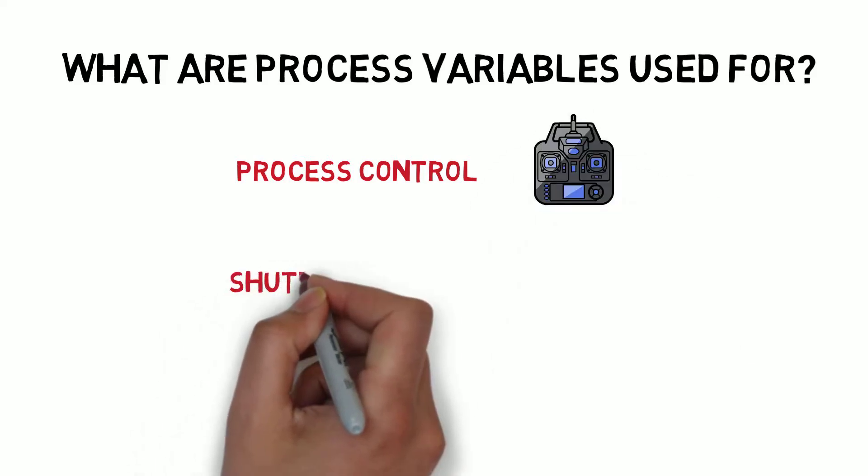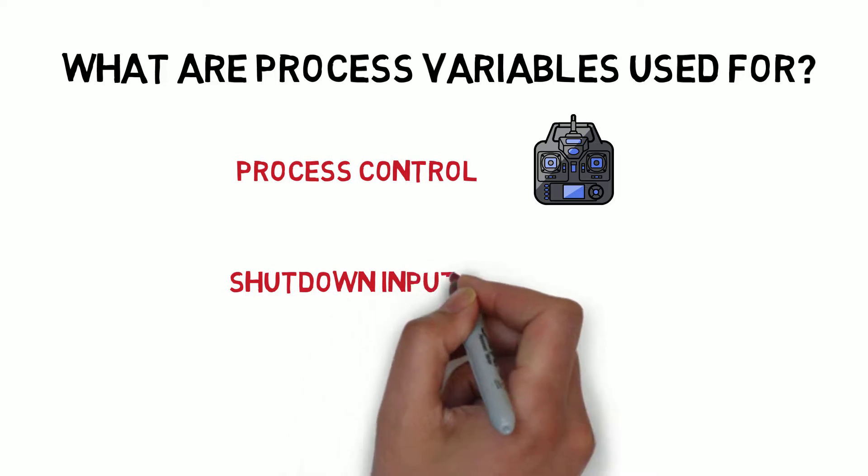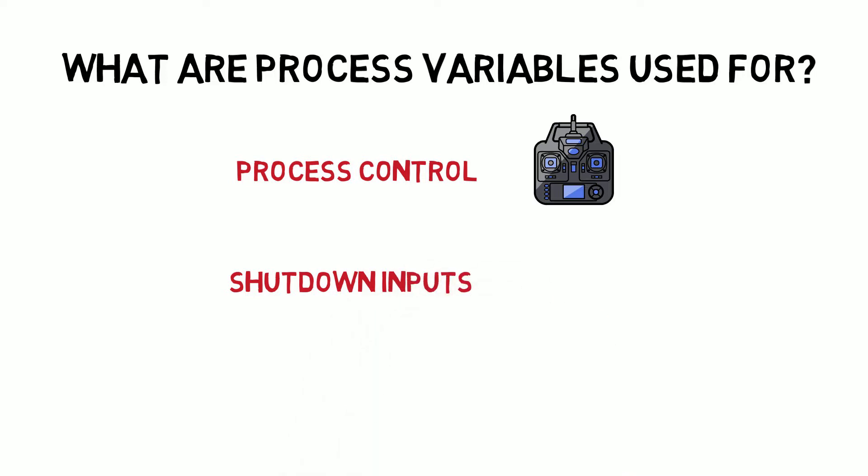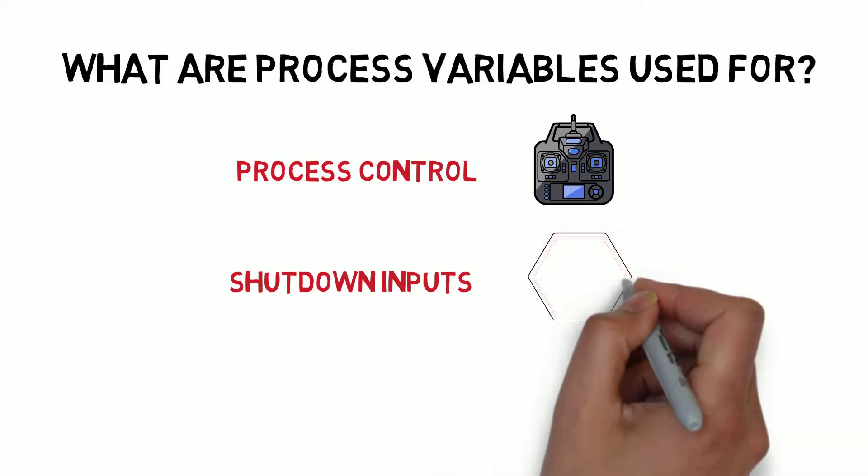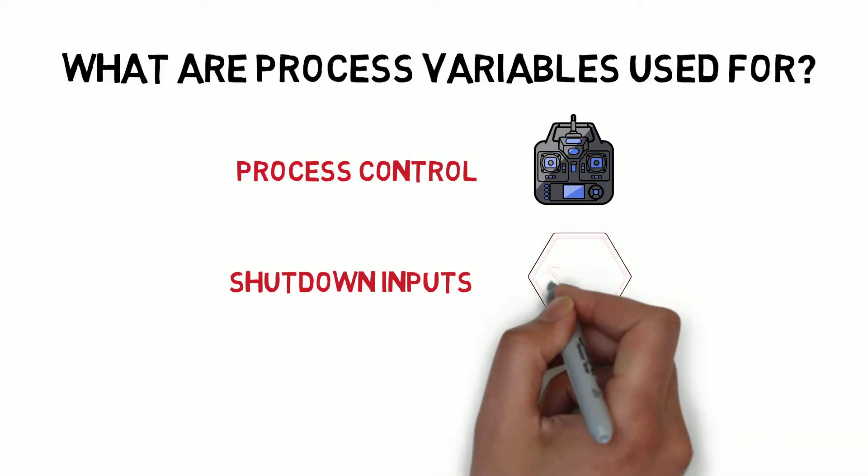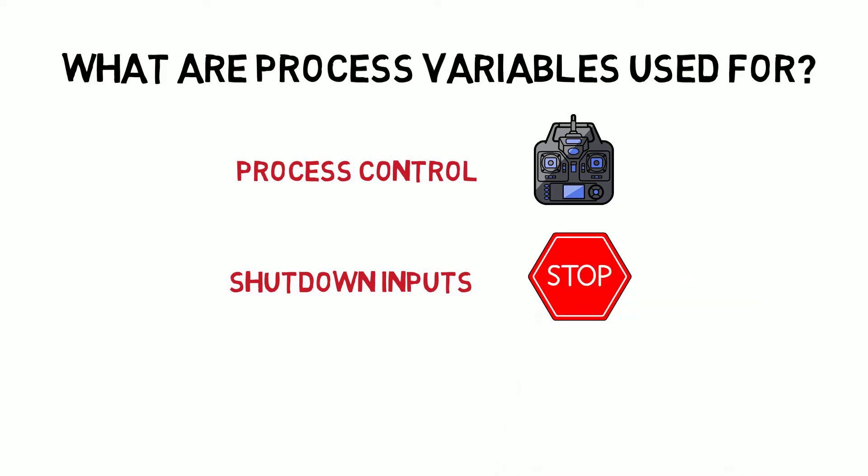They are used as initiators for shutdown systems. These systems will shut the plant down if there are unsafe conditions. A typical example would be an input to a HIPS or high integrity pressure protection system that protects pipe work or vessels from being over pressurized past their safe design limit.